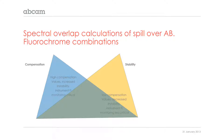Regarding compensation: if you have high compensation values, you will increase the instability of the experiment. The instrument fluorescent intensity — that is, the signal intensity within the photomultiplier tubes — the monitoring becomes critical. With low compensation values, instrument fluorescent intensity monitoring is less demanding.